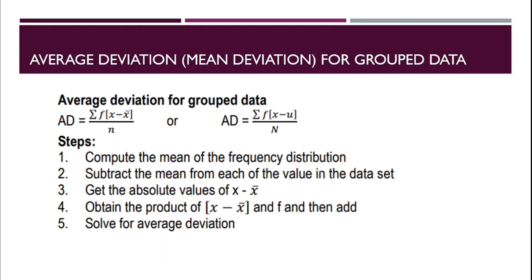So for average deviation for group data, here is the formula. This is the absolute value — I'll just correct it first. The formula is the summation of frequency times the absolute value of x minus x-bar, over n. This is the average deviation for a sample, and this is for a population. The steps are: first, compute the mean of the frequency distribution; second, subtract the mean from each value in the data set; third, get the absolute value of x minus the mean; then obtain the product of the absolute value of x minus the mean and the frequency; finally, add and solve for the average deviation.